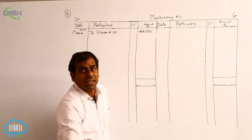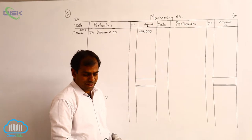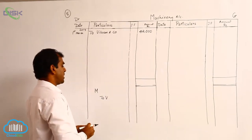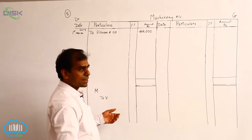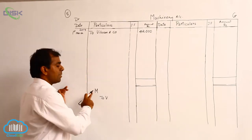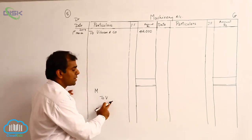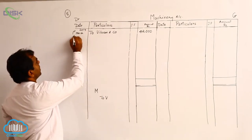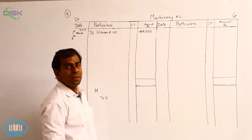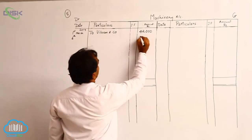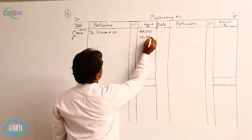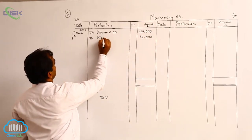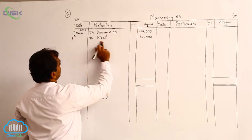On 6th March, machinery was purchased from Virat. The entry is the same: Machinery Account debit to Virat's Account. We debit the machinery account with ₹16,000, with the reason being that we purchased from Virat.